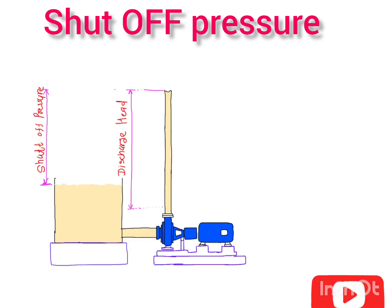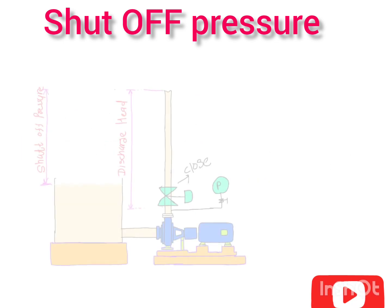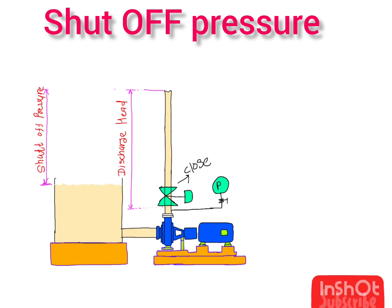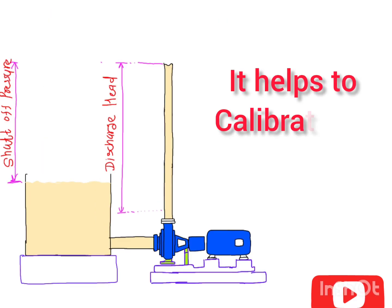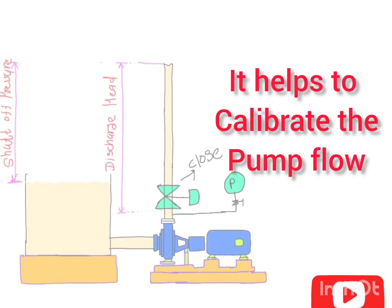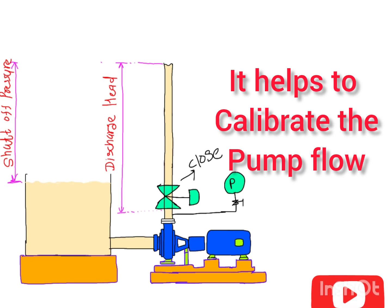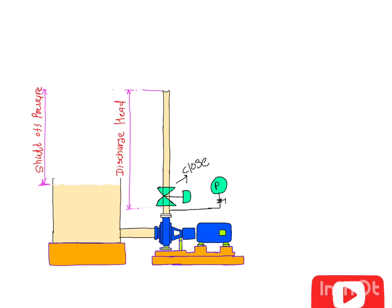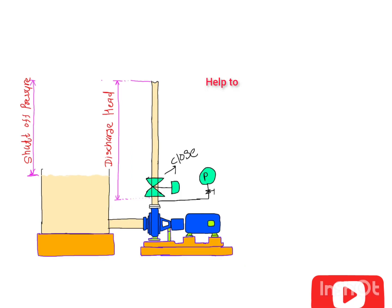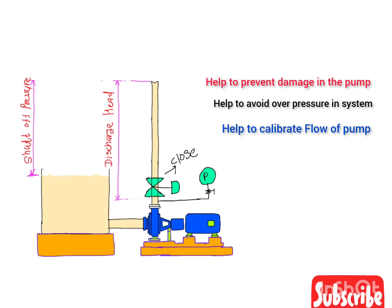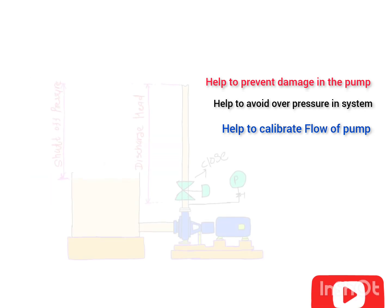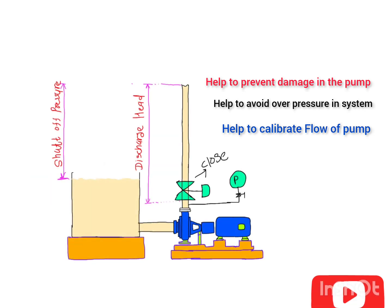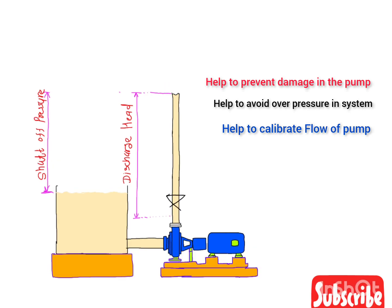The third benefit is that shut-off pressure helps in systems that require precise flow control, such as chemical processing or water treatment. The shut-off pressure is used to calibrate the pump and ensure that it delivers the desired flow rate at a given pressure. So these are the three main benefits: it helps prevent pump damage, prevents overpressure in the system, and ensures accurate flow control.